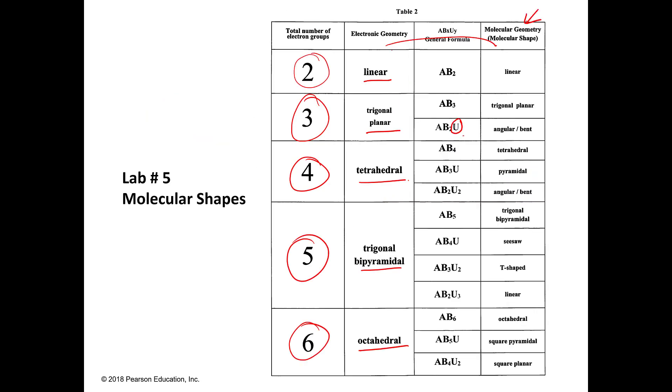So that tells me that the molecular and the electronic geometry are going to be the same, trigonal planar. And if I look back at my chart, it has three trigonal planar, AB3, so the molecular geometry is also trigonal planar.